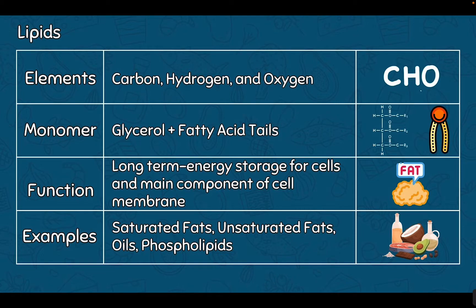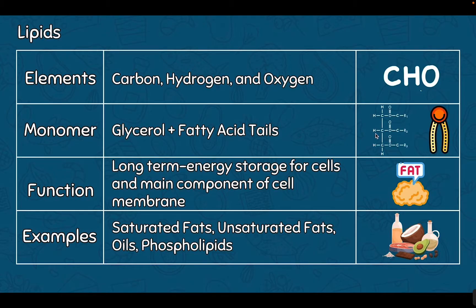The next biomolecule is lipids. Lipids also consist of the elements carbon, hydrogen, and oxygen. However, we no longer have the two-to-one rule for hydrogens to carbons. The monomer of lipids has two parts: the glycerol, which is the backbone, and the fatty acid tails. The glycerol can also be attached to a phosphate group. The whole structure is made up of carbons, hydrogens, and oxygens.